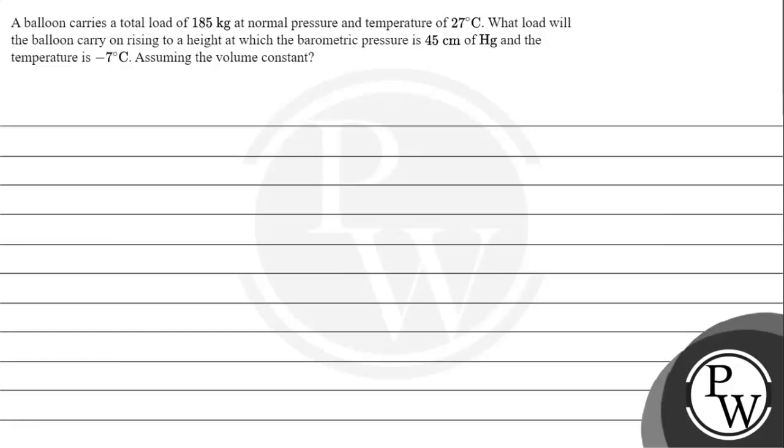Hello, let's read the given question. A balloon carries a total load of 185 kg at normal pressure and temperature of 27 degrees Celsius. What load will the balloon carry on rising to a height at which barometric pressure is 45 centimeter of Hg and temperature is minus 7 degrees Celsius, assuming the volume to be constant?